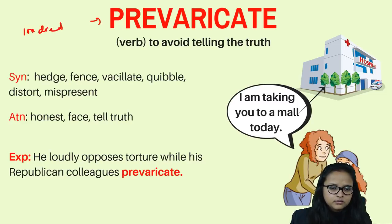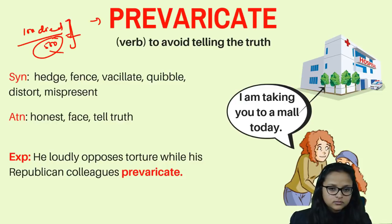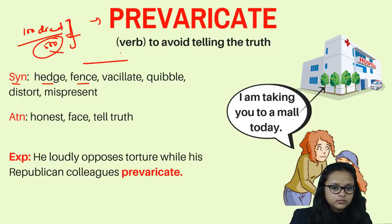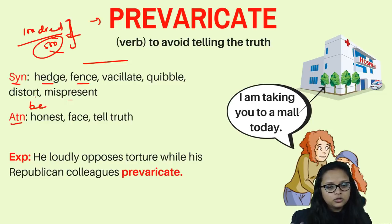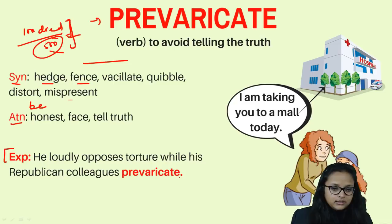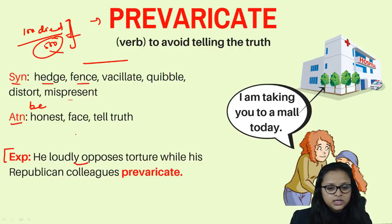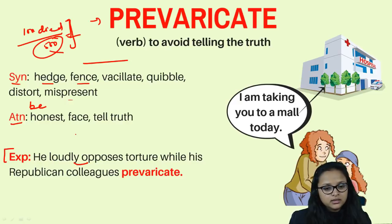Politicians may say only 100 people died when in reality 500 were killed — this activity of hiding the truth is called prevaricate. Synonyms are: hedge, fence, vacillate, equivocate, distort, and misrepresent. Antonyms include being honest and telling the truth. Example: 'He loudly opposes torture while his Republican colleagues prevaricate' — meaning they were not being truly honest and were hiding facts even while facing the situation.